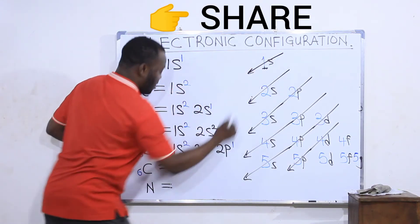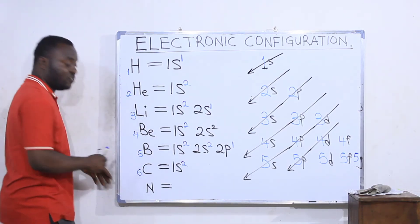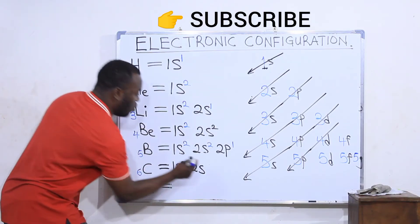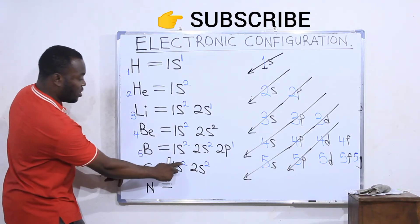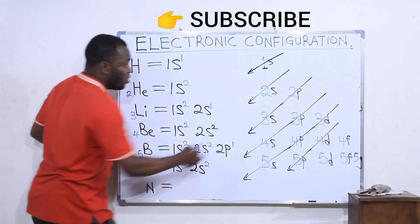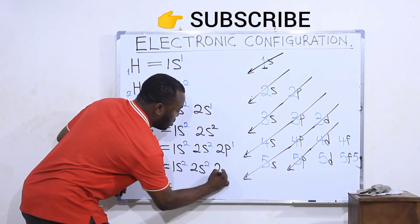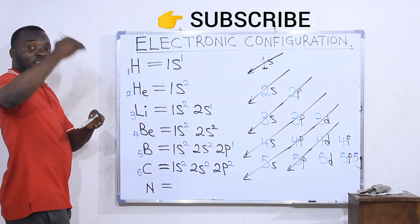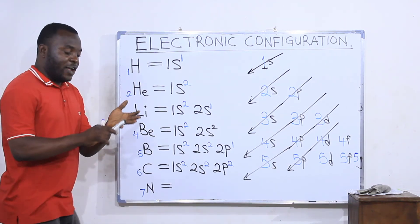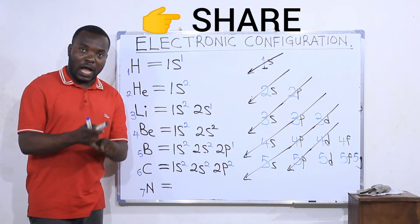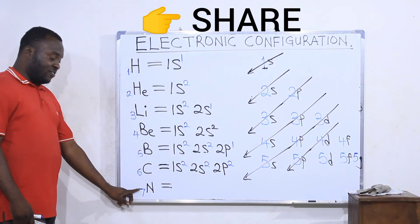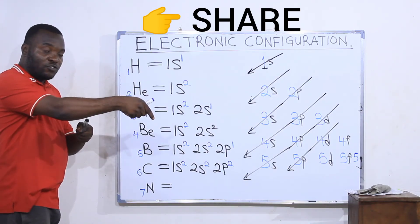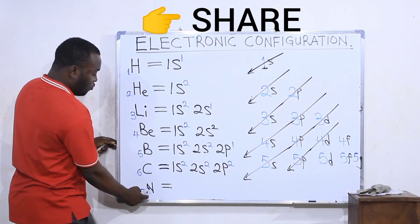For carbon, element number six with six electrons: 1s collects two, remaining four. Then 2s collects two, remaining two. Then 2p collects the remaining two electrons — p can carry up to six. Carbon's configuration is 1s² 2s² 2p². You always count the first twenty elements to know how many electrons you are working with.